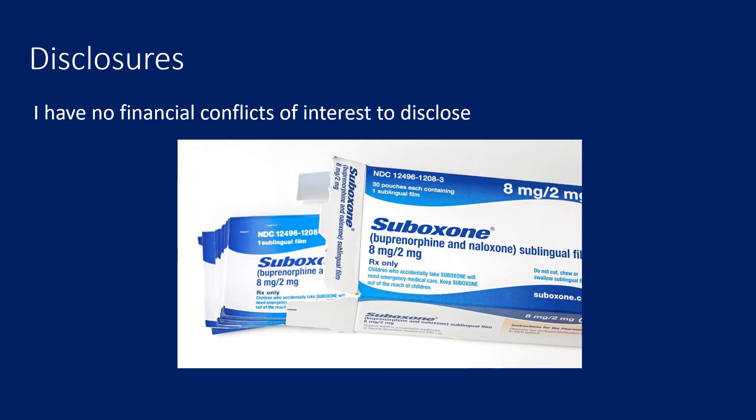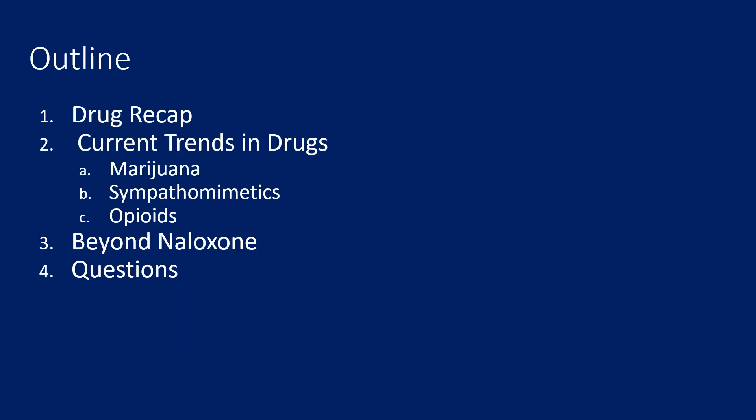I do have one disclosure: I am going to talk a little bit about Suboxone as a treatment for opioid use disorder. I don't get any money from drug companies and I don't have any financial conflict of interest, but I will mention it today. I will also be talking about this topic, which is a little bit beyond the scope of BLS, but I think it's worth it for you guys to know about because I'm hoping it will come to an ALS unit near you soon. Today we're going to do a quick drug recap on all the different drug classes and what you can do about them, talk about some current trends, and then get into therapy for opiate use disorder beyond naloxone — that's the Suboxone I just mentioned.